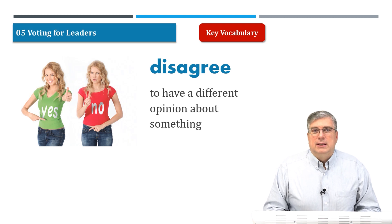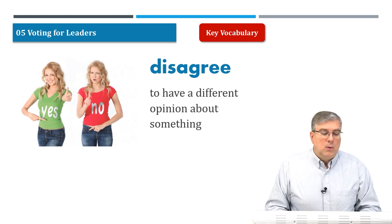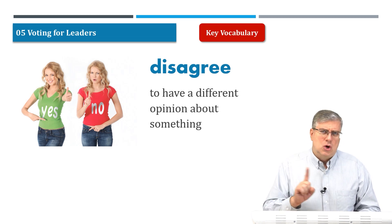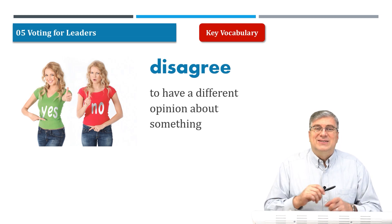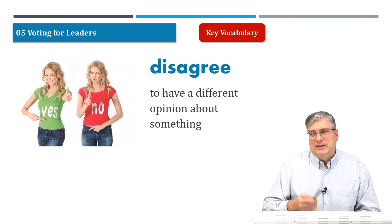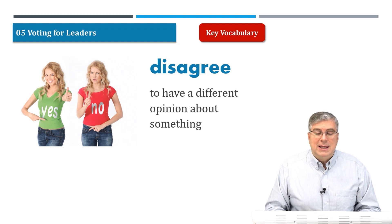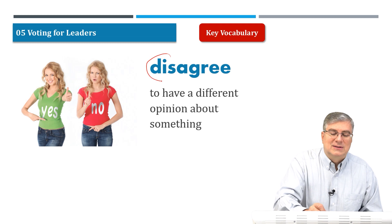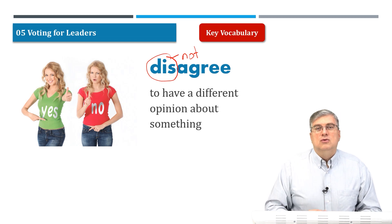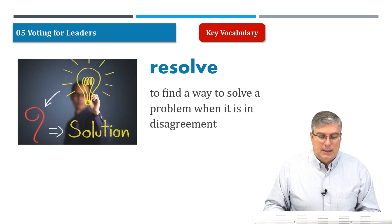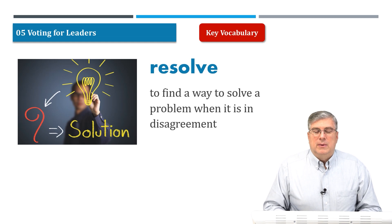Next: 'disagree.' We have two women here. The one on the left says 'yes, I agree,' but the woman on the right says 'no, I don't agree' — so they disagree. If you say no about something and somebody says yes, they disagree with you. 'Dis-' is a prefix that means 'not,' so disagree simply means 'not agree.'